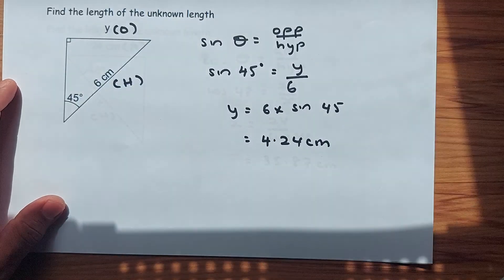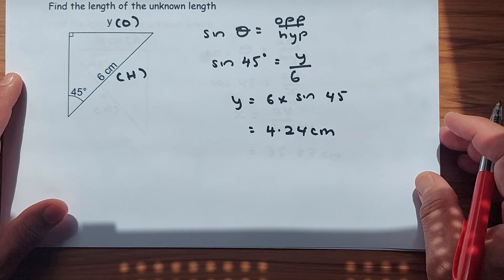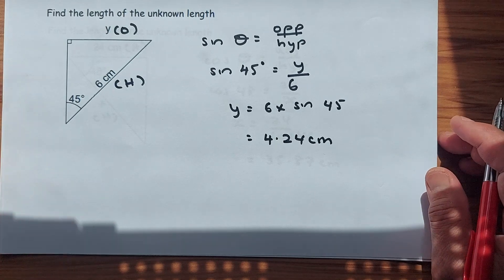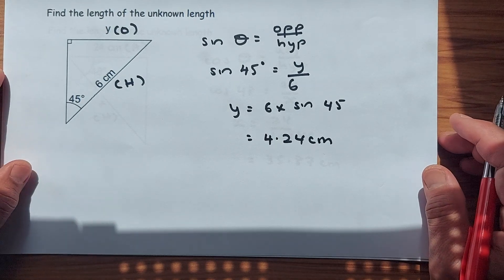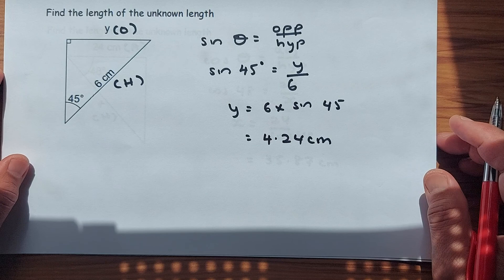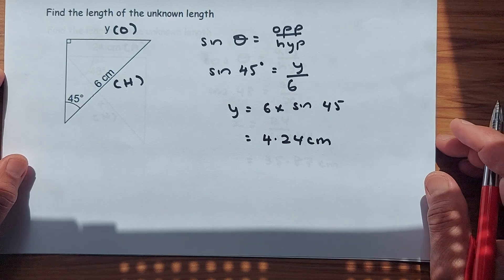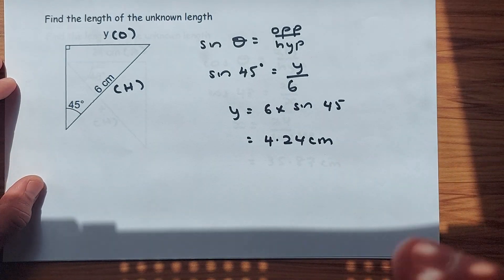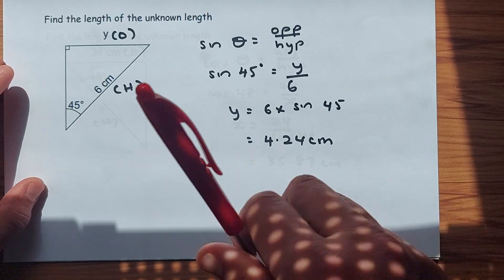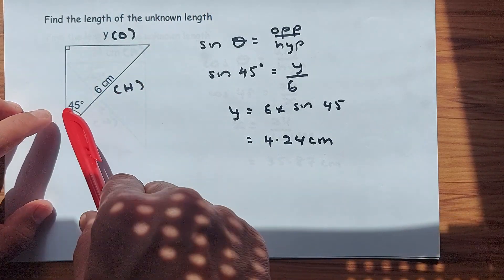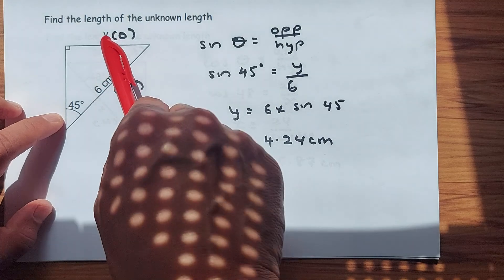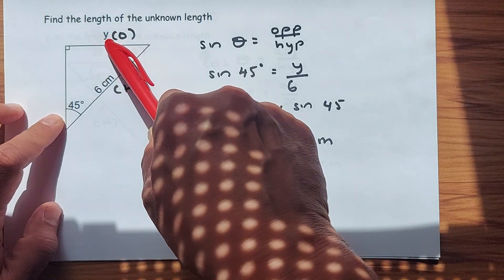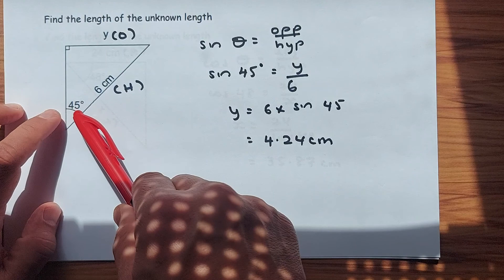Now we'll look at trig ratio. When calculating trig ratio, make sure your calculator is in degrees mode. If you are in radian mode, your answer will be wrong and you will not get any marks. Make sure you see the D or degrees on your calculator. This example has one angle and one side given, so you need to find another side using trig ratio. First, label the triangle.